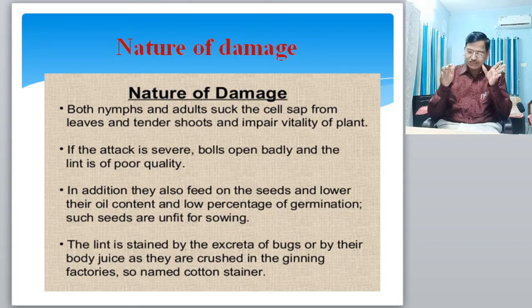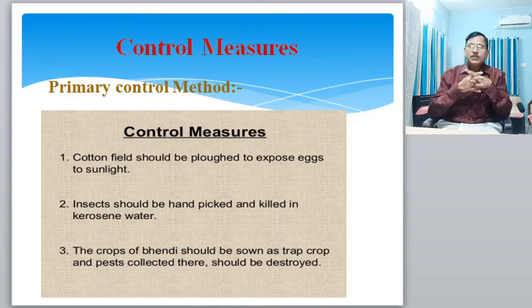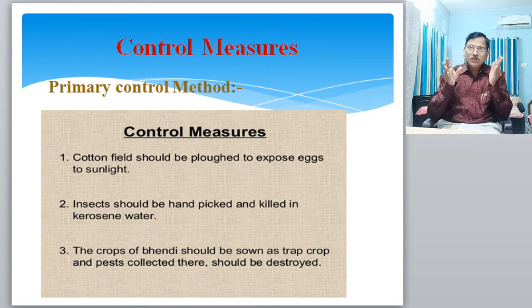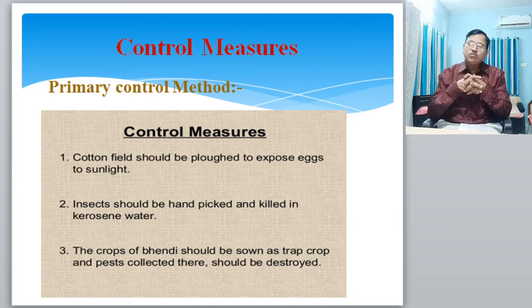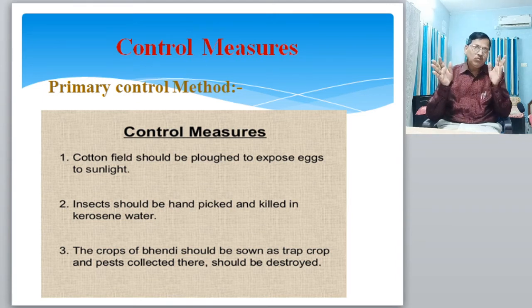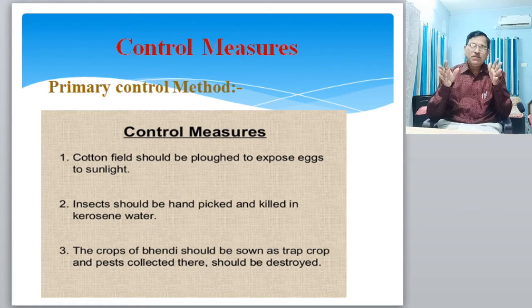Control measures are used to prevent excess loss of the cotton crop. Each and every insect pest attacking cotton is controlled by three methods.